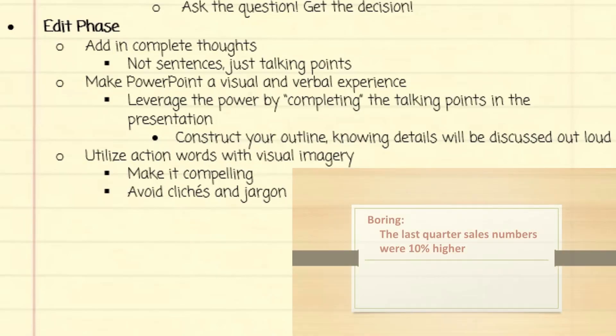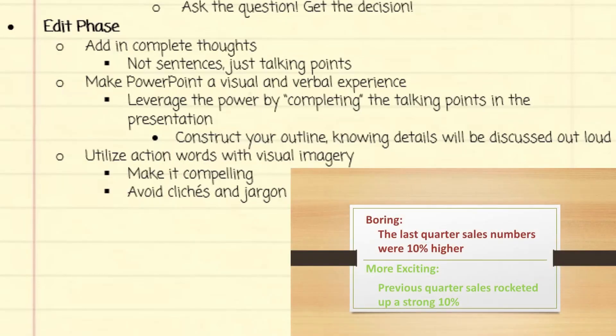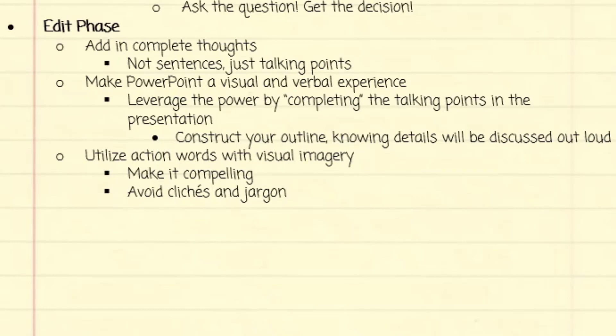Here's the first boring version. The last quarter sales numbers were 10% higher. How about this instead? Previous quarter sales rocketed up a strong 10%. Notice how we changed from passive voice to active with the qualifier, the word strong.